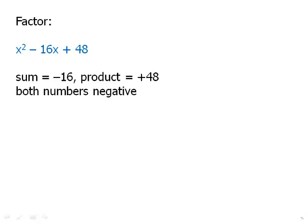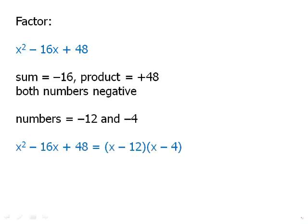Ah, 4 times 12 is a sum of 16. So, -4 times -12 would be positive 48 but -4 plus -12 would have a sum of -16. These are the two numbers that we need. So, we can factor this into (x - 12)(x - 4).